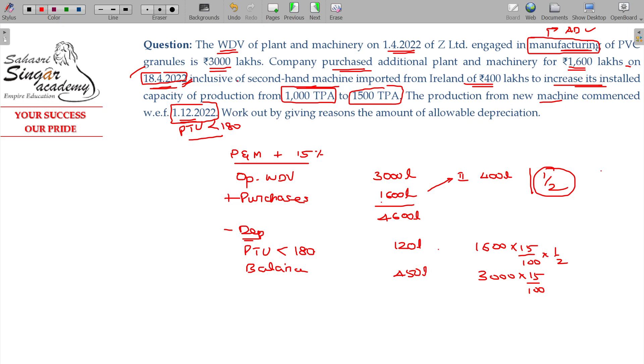And it is a manufacturing company. Additional depreciation on plant and machinery. 1600 lakhs minus the 400 lakhs second-hand, new asset balance 1200 lakhs. Additional depreciation is eligible for only the new asset purchased. 1200 into 10 percentage, as put-to-use is less than 180 days, half year depreciation of 10 percentage only will be eligible, 120.